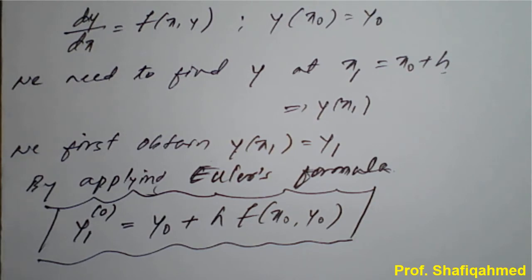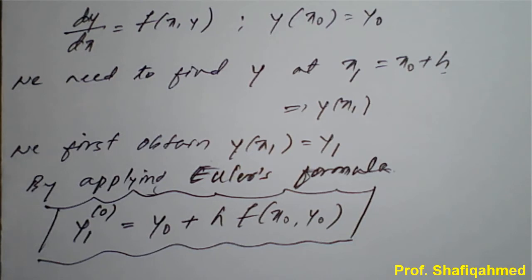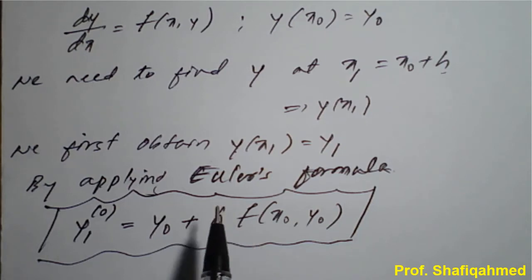That correction which the examiner has done — for that we use the term Modified Euler's Formula. Since the accuracy is poor in Euler's formula, the prediction may be more or less than the actual value. So the value from Euler's formula is a predicted value of y₁, and to get a more accurate value we need to use Modified Euler's Formula.